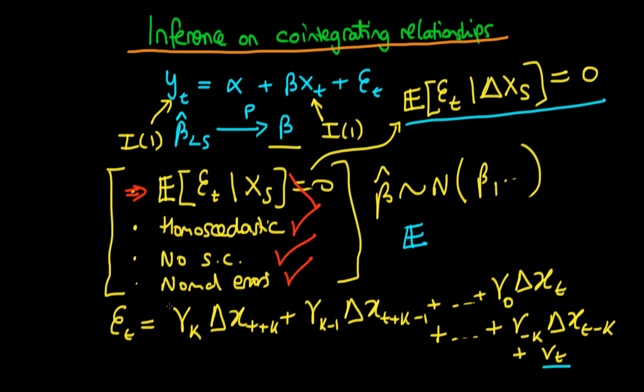by mere construction, the expectation of vt given any change in x is equal to zero. In other words, vt does actually satisfy the strict exogeneity assumption. So if there was a way that we could get this vt into this above regression in place of et, then we would have actually solved our problem.